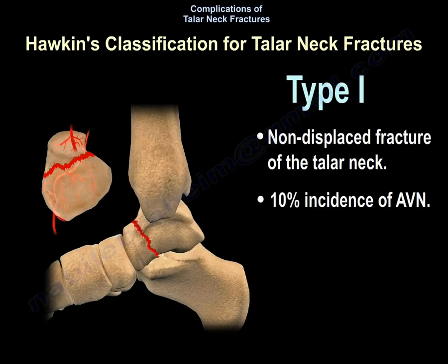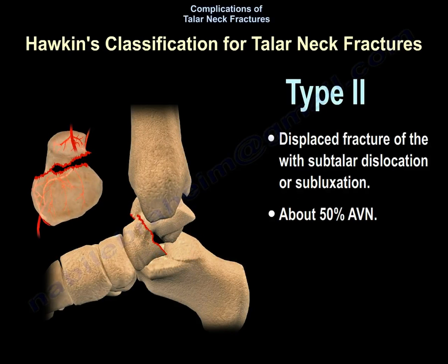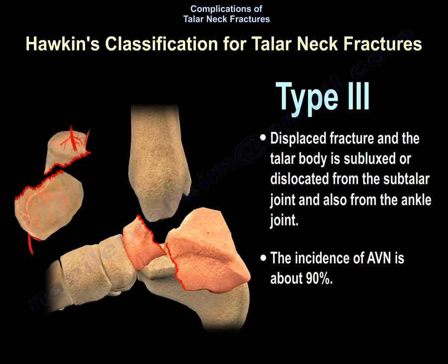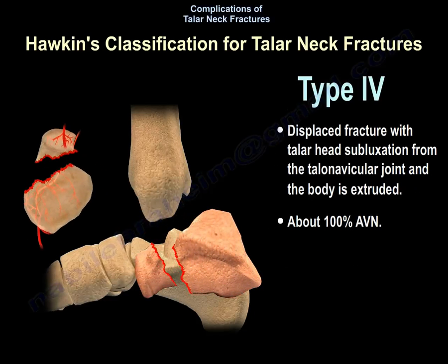There are four types of Talus Neck Fractures. Type 1 is a non-displaced fracture with an AVN incidence of 10%. Type 2 is displaced with subtalar dislocation or subluxation, and AVN is about 50%. Type 3 is a displaced fracture where the talus body is subluxed or dislocated from both the subtalar and ankle joints, with an AVN incidence of about 90%. Type 4 is a displaced fracture with talus head subluxation from the talonavicular joint and extrusion of the body, with AVN approaching 100%.